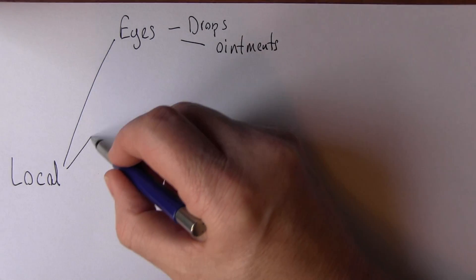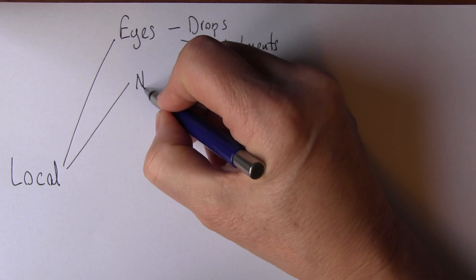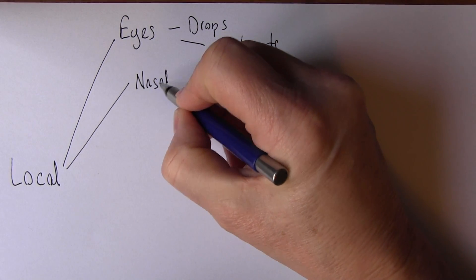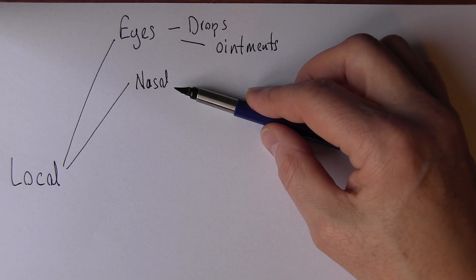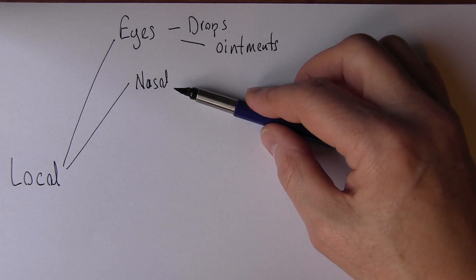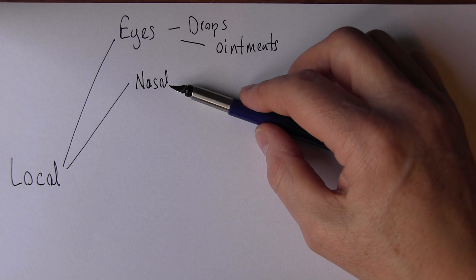Another possible local administration is nasal, giving medications into the nose. For example, there might be adrenaline-based administrations to deal with nosebleeds, epistaxis. The adrenaline preparations can bring about some localized vasoconstriction to reduce the bleed.